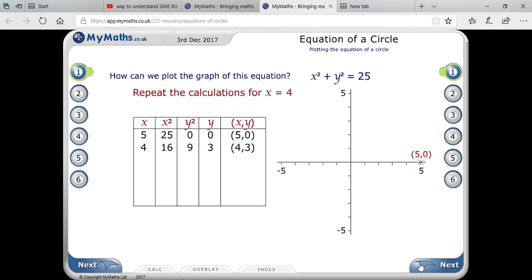You might ask, why are we taking 5, then 4, then 3, then 2, then 1? Why? Because you can see that...